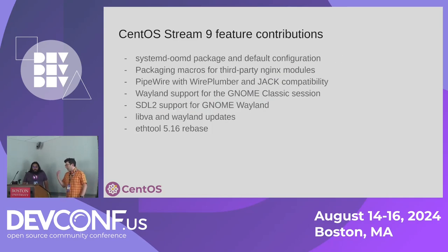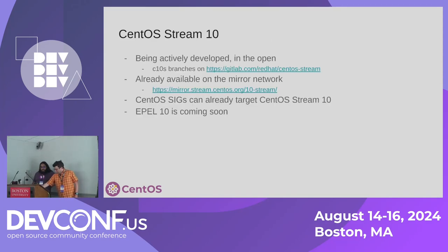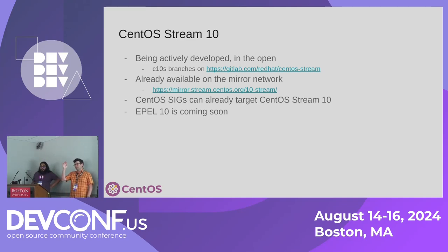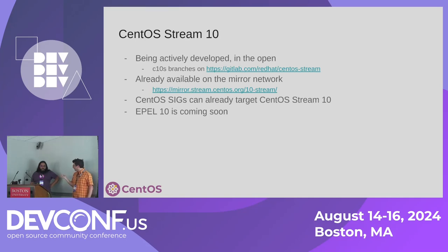Over the years we've contributed features to CentOS Stream including systemd-umd, graphics stack enablement, and user space plumbing. Stream 10 already exists — you can install it now. It's not officially released but it's on the mirrors and being actively developed. The GitLab has branches for C8s, C9s, and C10s, with C10s being where Stream is currently being developed. SIGs can already target Stream 10, and several are building content for it. EPEL 10 is coming soon — at Flock last week we had a hackfest to start bootstrapping EPEL 10 content and already have around 200 packages.